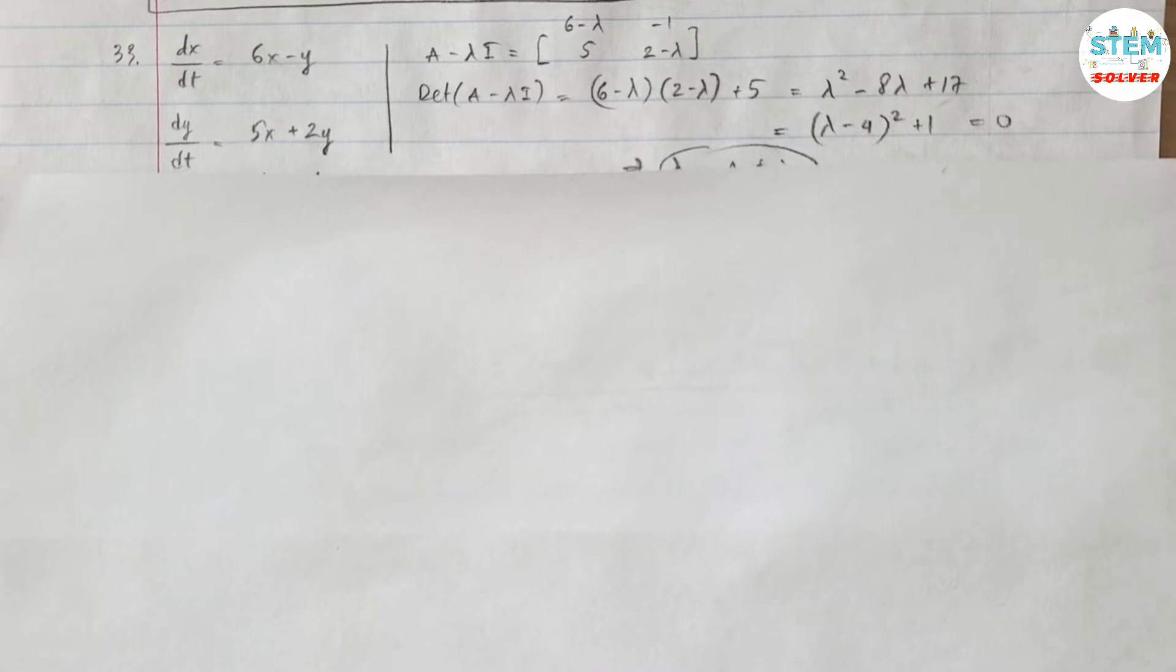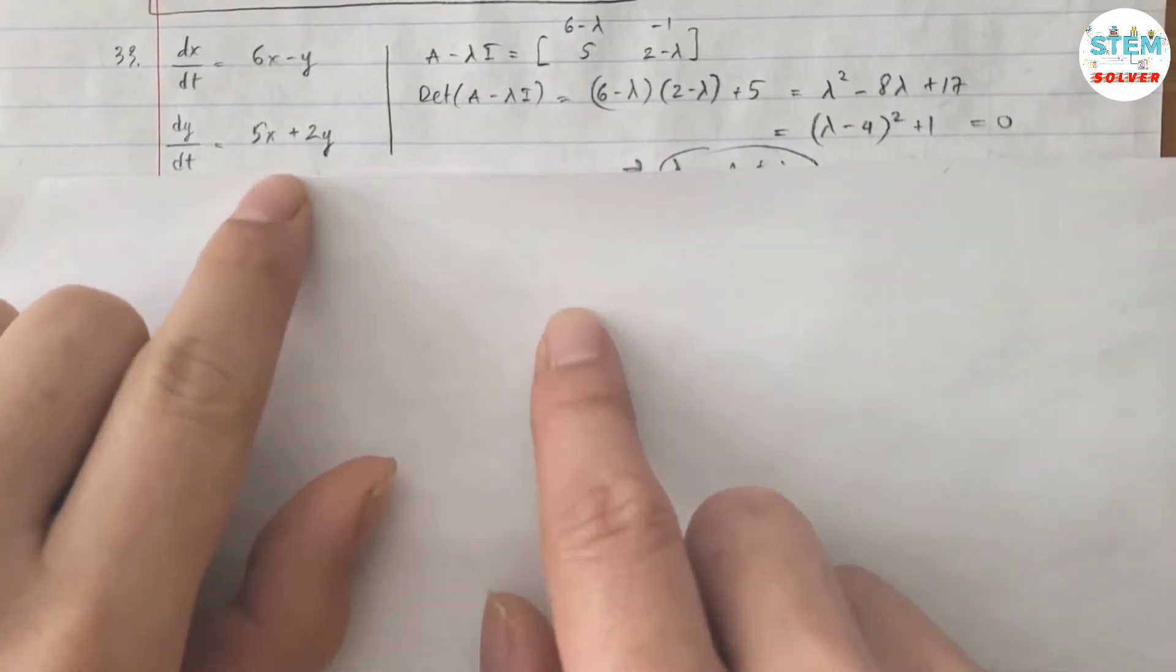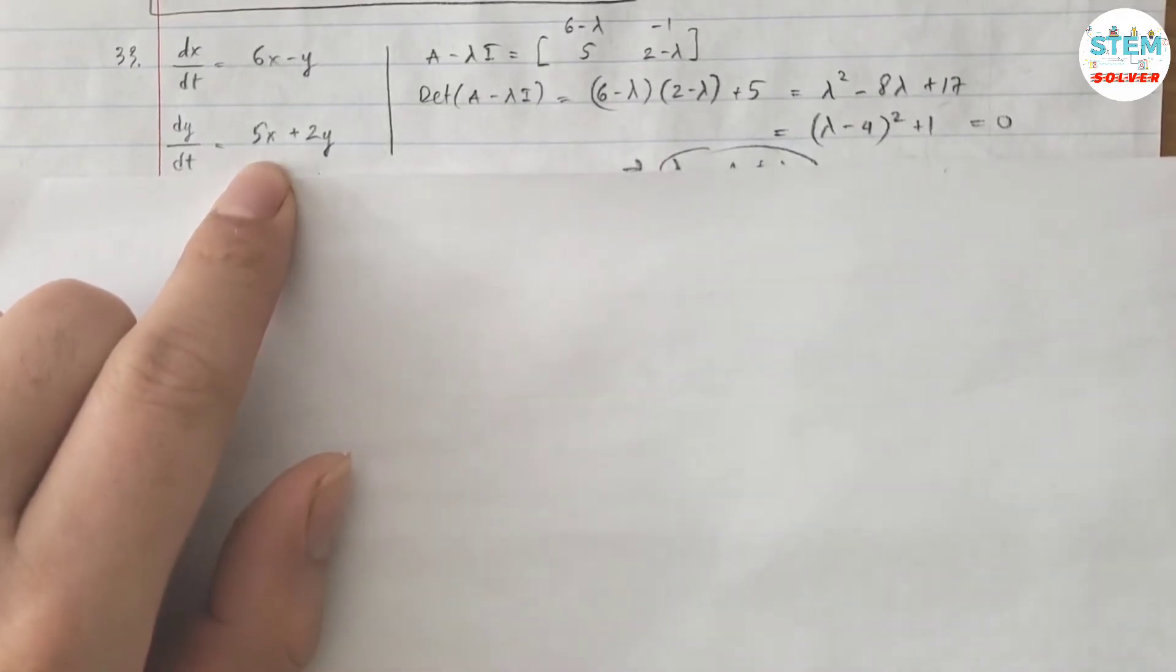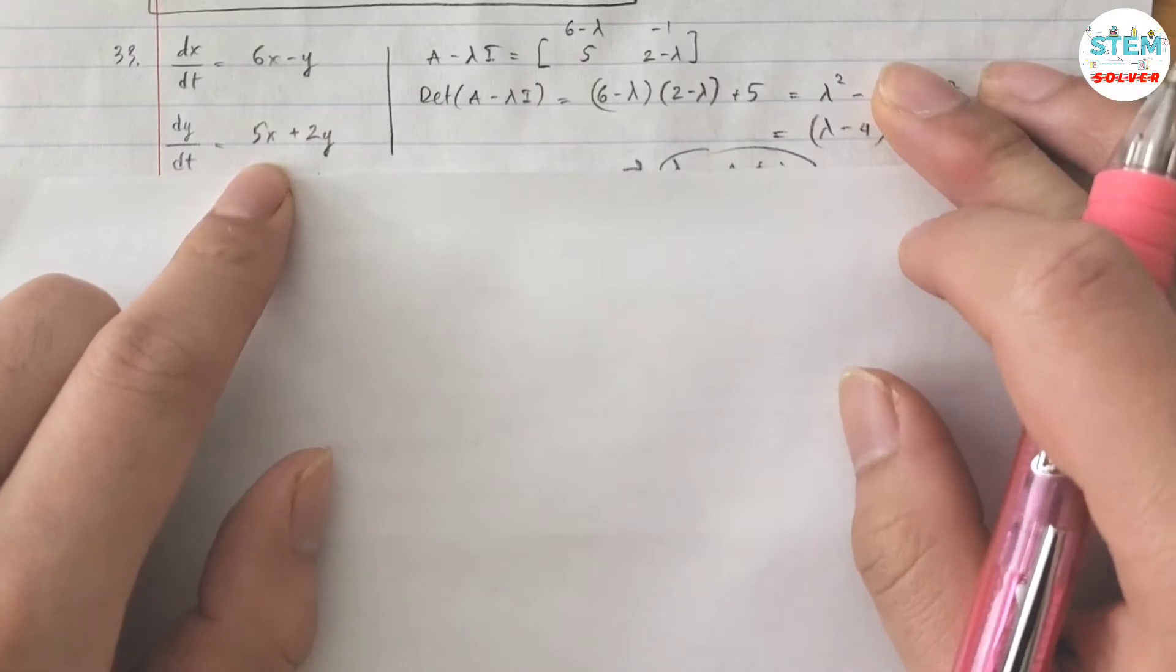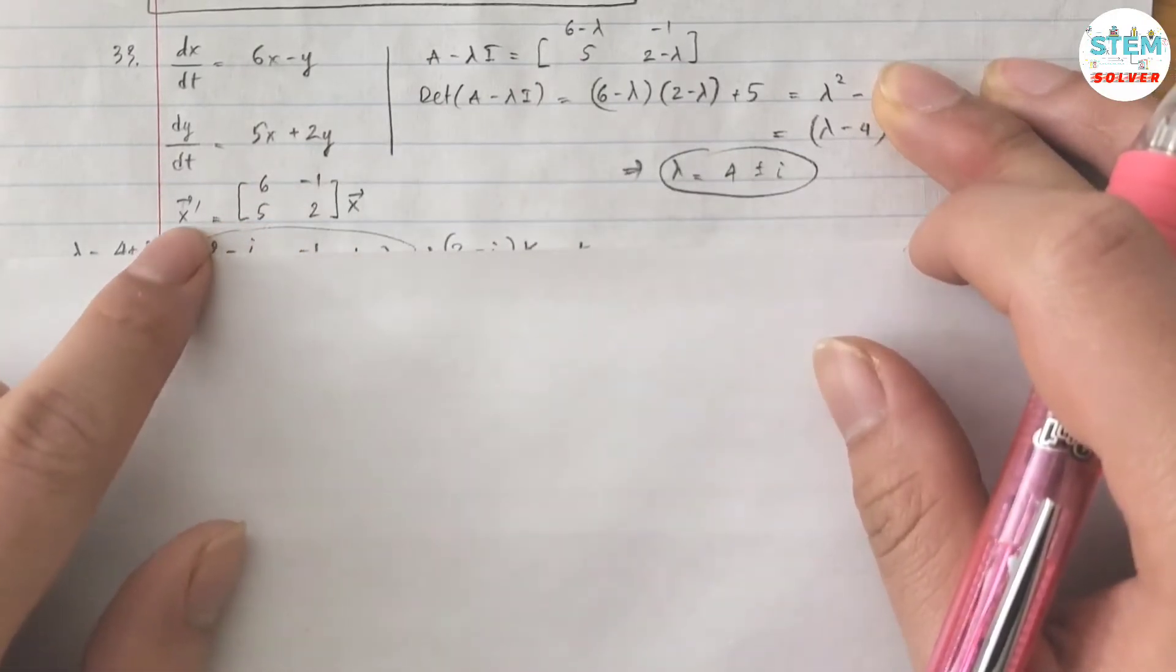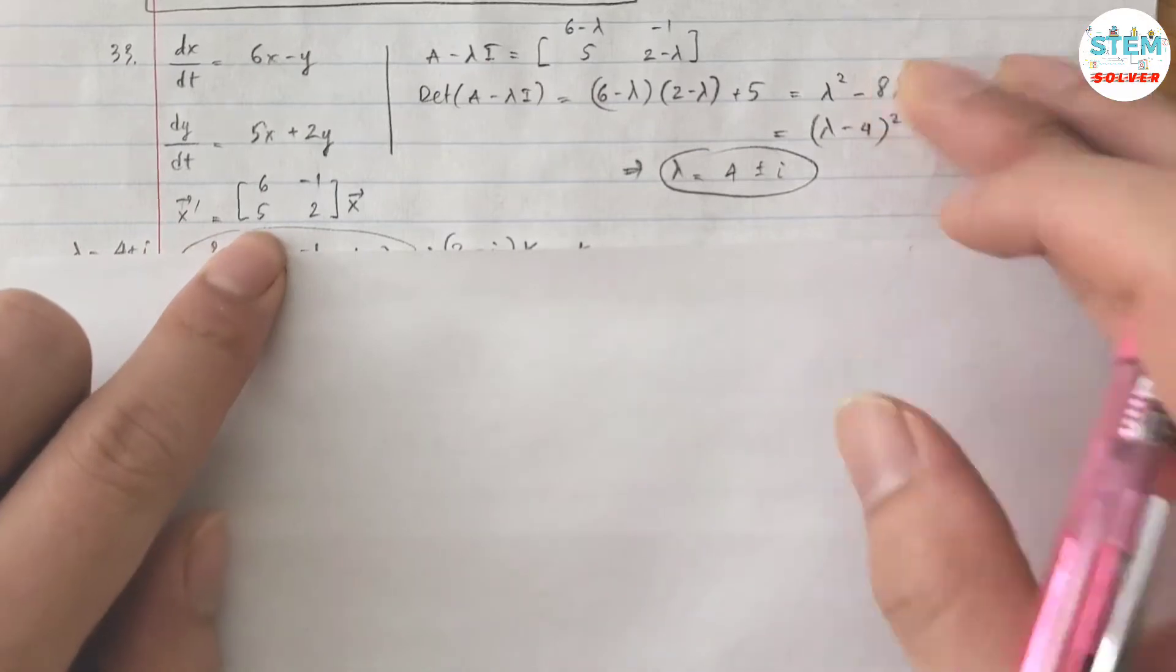Find the general solution of the given system. So you are given this system and the first step is to write it in vector x'. So you have this one.